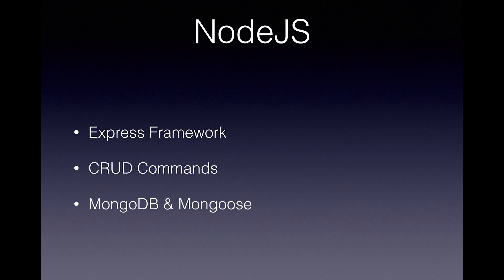Once you've got the basics of Node down, look at the Express framework, which allows you to build servers. Look at CRUD commands — create, read, update, and delete. Also look at MongoDB and Mongoose. MongoDB is a NoSQL database written in JSON objects, and Mongoose is the query language for MongoDB. All of this is joined together with Node.js on the back end.